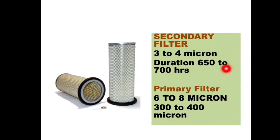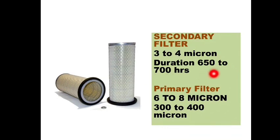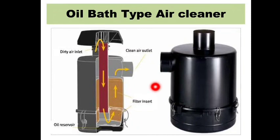The secondary filter has smaller micro pores and a longer service life of 650 to 700 hours. This is regularly asked in exam questions: after how many hours should the secondary air filter be replaced, and after how many hours should the primary air filter be replaced? So remember: secondary filter should be replaced after 650 to 700 hours, and primary filter after 300 to 400 hours.